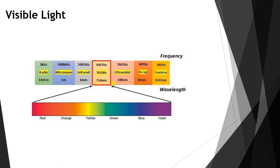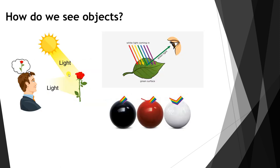Only a certain wavelength or frequency of light is visible to us. Now, how do we see objects? There is one important thing about seeing objects that will help you understand the Color Rendering Index. For example, we have our sun, which produces daylight. When this daylight falls on an object, the light will reflect from that object and our eye will see it.